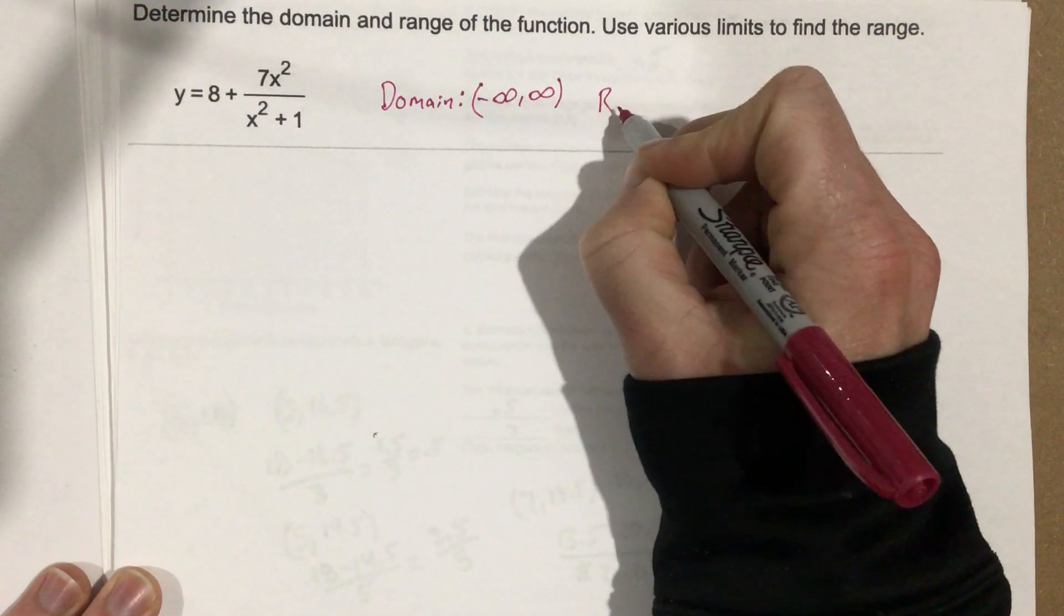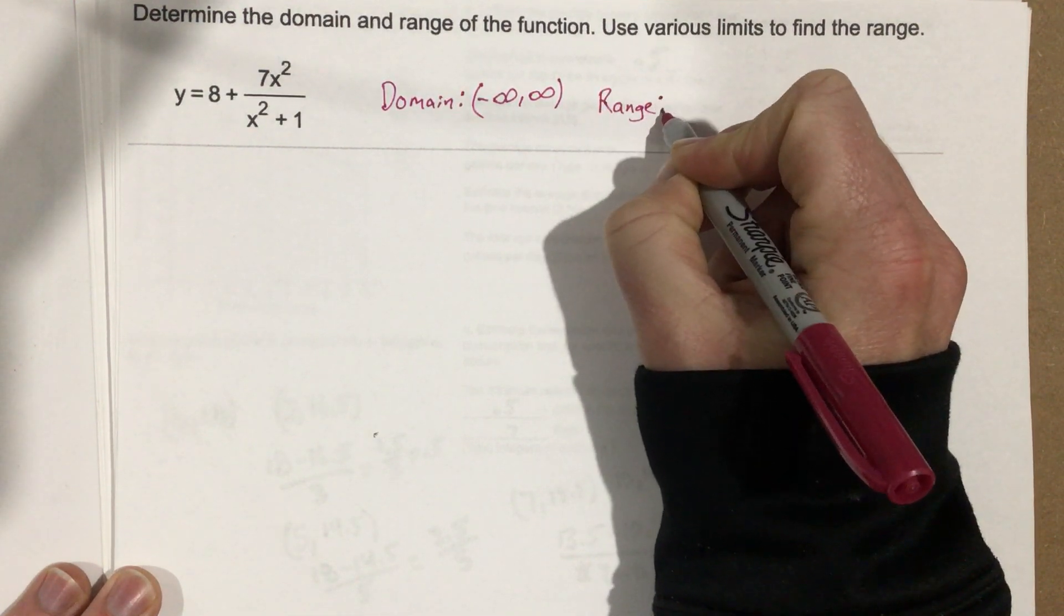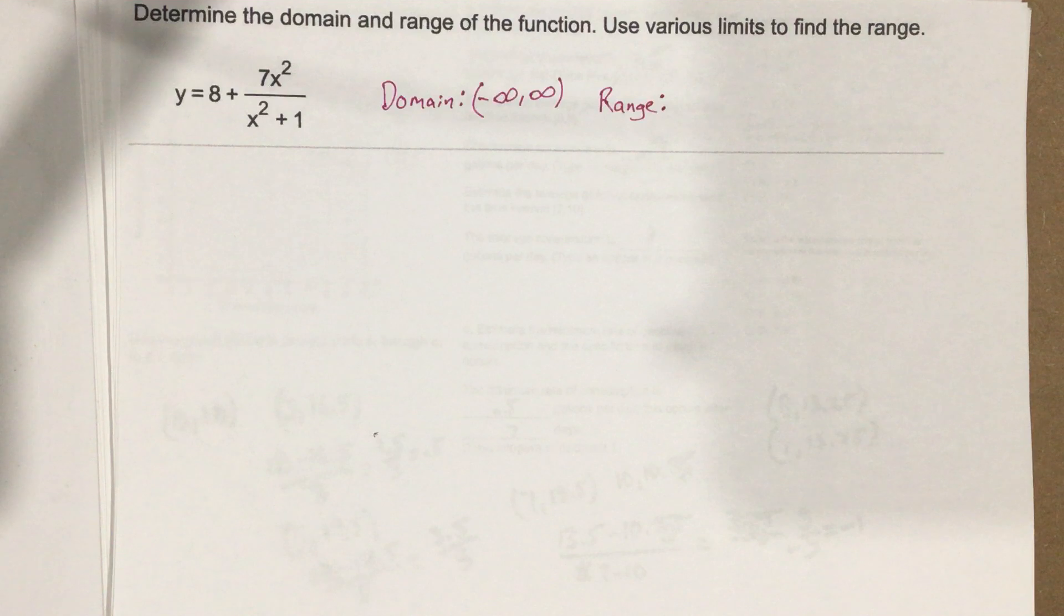Now we need to find the range value. They say use various limits to find it. Typically when you look at a problem you want to figure out what is the function doing as it goes towards infinity, what's the function doing as it goes towards negative infinity, and what's it doing kind of in the middle. Usually I'll try to go with what's happening at 0 just to start and we'll see what we get here.